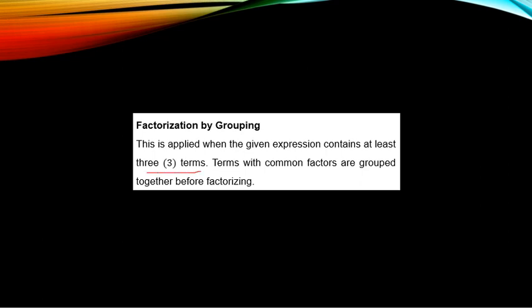Factorization by grouping is applied when the given expression contains at least 3 terms. 'At least 3' means 3 and above, so the minimum is 3 — it can be 3, 4, 5, 6, and so on. Terms with common factors are grouped together before factorizing. You do not take terms with different factors as one group. Terms with common factors are grouped together before you factorize.